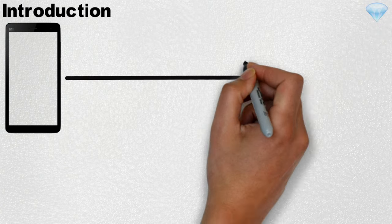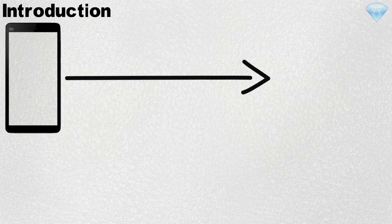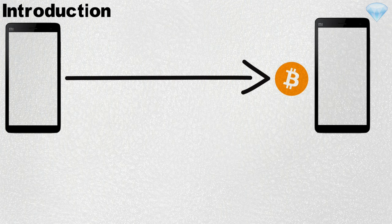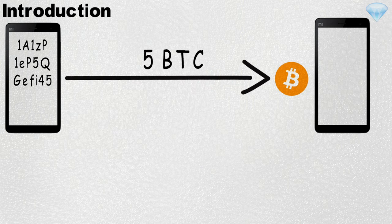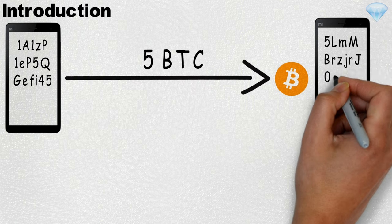Introduction. When someone sends Bitcoin to you, they send Bitcoin to your address. If you want to spend any of those Bitcoins that are sent to your address, you create a transaction and specify where your Bitcoin will go. Such a transaction may look like: transfer 5 Bitcoins from this address to this address.